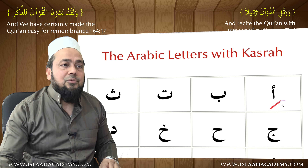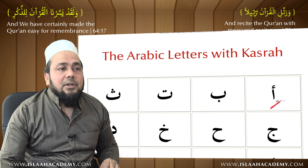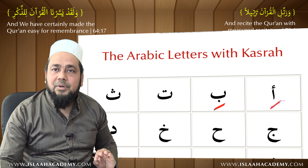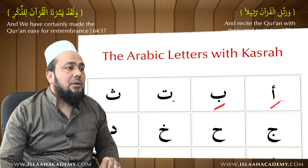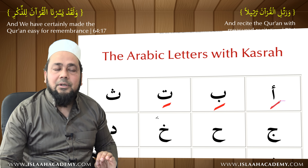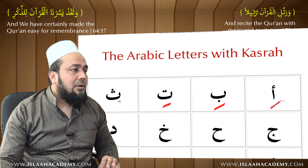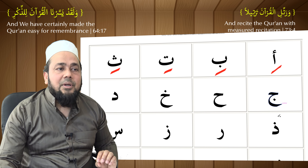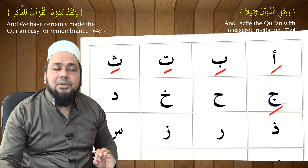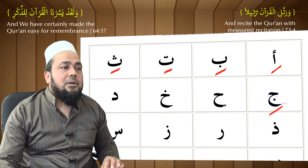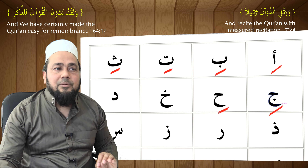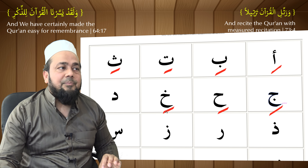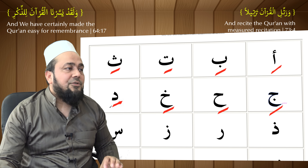Let me show you how it works. Alif kasra — 'i'. Ba kasra — 'bi'. Ta kasra — 'ti'. Sa kasra — 'fi'. Jim kasra — 'ji'. Ha kasra — 'hi'. Khaa kasra — 'khi'. Dal kasra — 'di'.